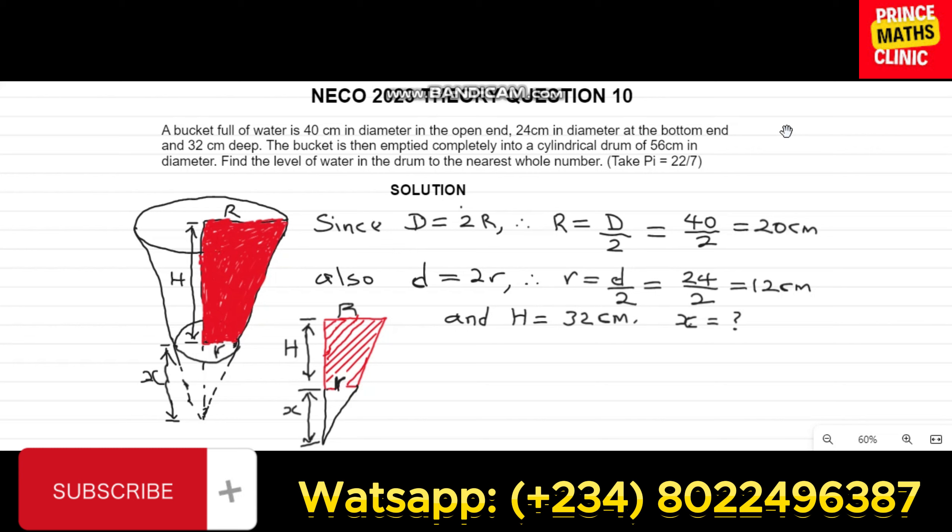We are excited to have you here for our 10th day of the 11th day challenge. Today we will be tackling NECO theory question 10, which involves calculating the volume of frustum on a cone and cylinders.